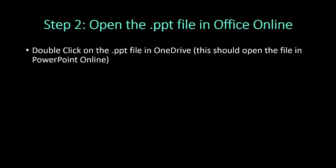The second step is easy. You should already have access to either Office Online or Office 365. In either case, your OneDrive should be linked to those accounts. Thus, all you have to do is click on the PowerPoint file that you uploaded to OneDrive, and this should automatically connect you to PowerPoint Online.